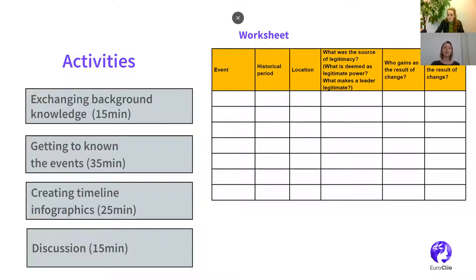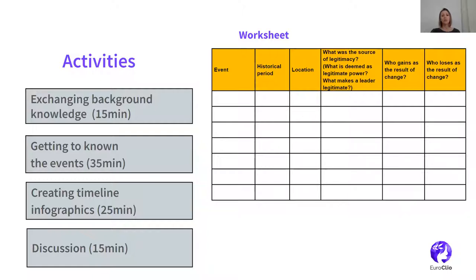My lesson has four activities. First, students exchange their background knowledge on the idea of legitimacy, and they will have 15 minutes for this activity. Students work in groups and write down what comes to mind when they think about legitimacy. They collectively decide on the five main features of legitimacy and present them to other groups, ultimately coming up with the final top features of legitimacy.